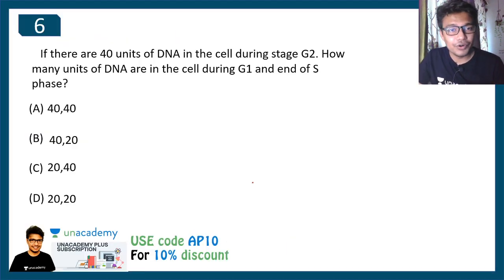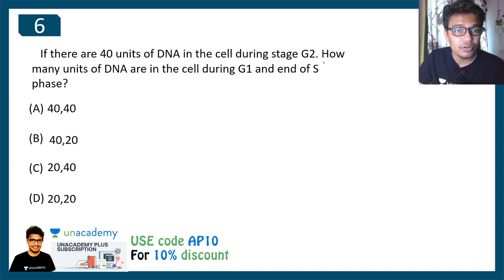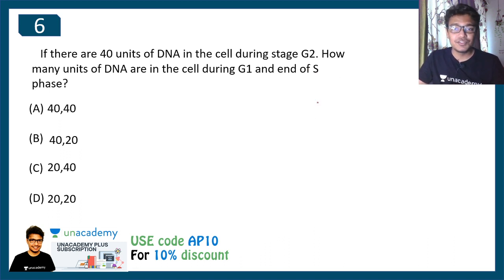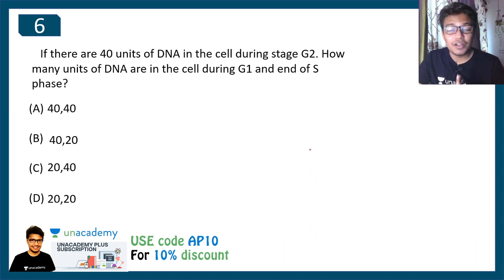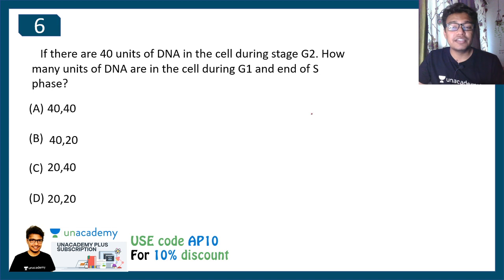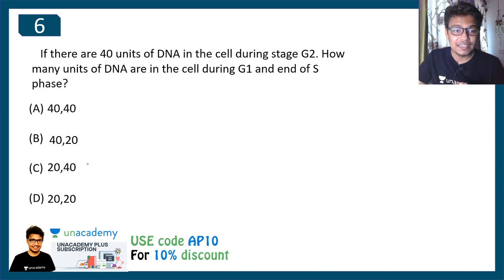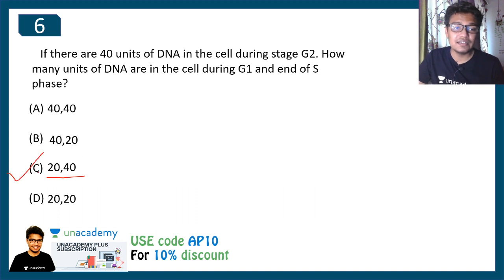Question six: if there are 40 units of DNA in the cell during G2 phase, how much DNA is there in G1 phase and S phase? DNA duplication takes place in S phase, so in S phase the DNA has already been duplicated — it would still be 40 units. In G1 phase, before replication, it would be 20 units — 20 replicating into 20 and 20 gives 40. So option C is correct: G1 has 20 units and S phase has 40 units.